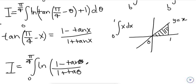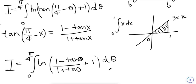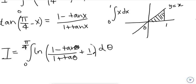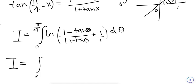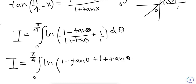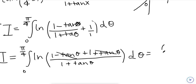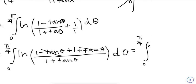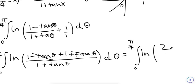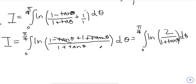So I equals the integral from 0 to π/4 of ln((1 − tan(θ)) / (1 + tan(θ)) + 1) dθ. Let's add those fractions: the numerator becomes (1 − tan(θ)) + (1 + tan(θ)) = 2 — the tan terms cancel — over (1 + tan(θ)). So we're left with the integral from 0 to π/4 of ln(2 / (1 + tan(θ))) dθ.